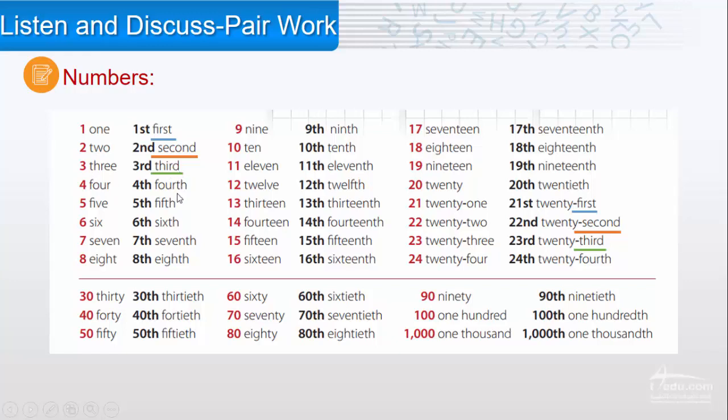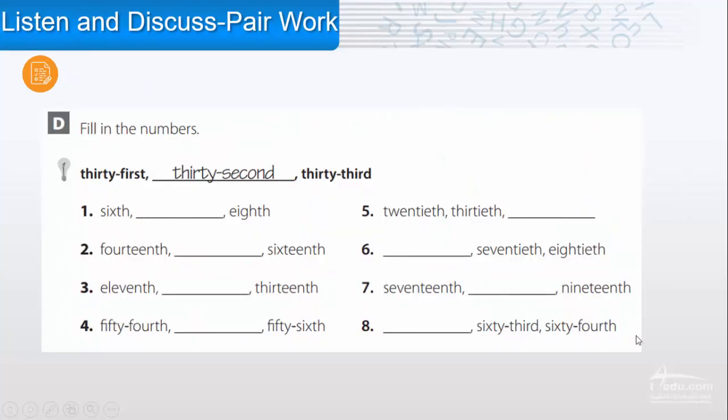Then we continue with 'th': fourth, fifth, sixth, seventh, eighth, until we reach 20th, then 21st, 22nd, 23rd, 24th, and so on. Here we have 30th, 40th, 50th, 60th, 70th, 80th, 90th, 100, 1,000. Fill in the numbers.